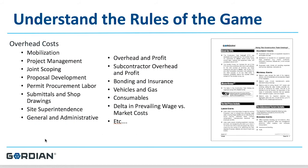Overhead costs to consider when calculating your adjustment factor include mobilization, project management, costs for joint scoping of each project, proposal development time, permit procurement, submittals and shop drawings, your site superintendent, and general and administrative expenses. Your overhead and profit needs to be in your factor, as well as your subcontractor's overhead and profit, your bonding and insurance, vehicles and gas, consumables, the delta in your prevailing wage versus market costs, and other expenses.